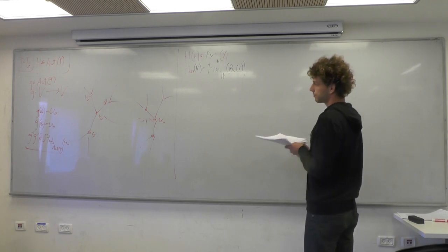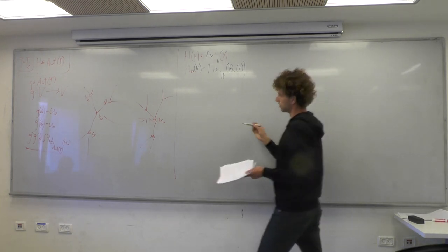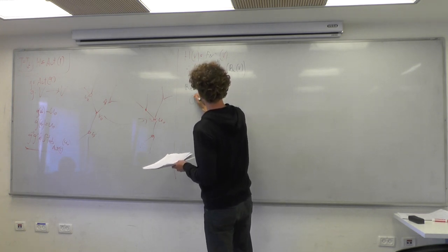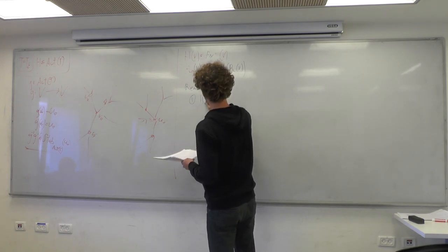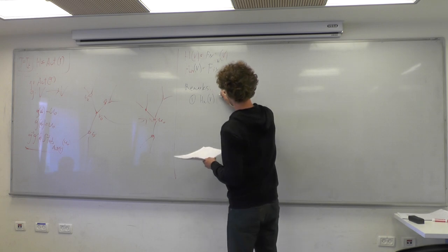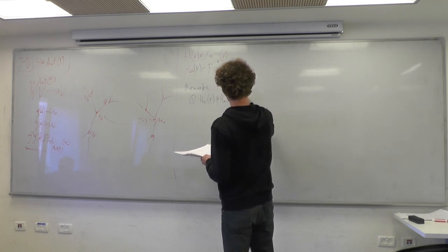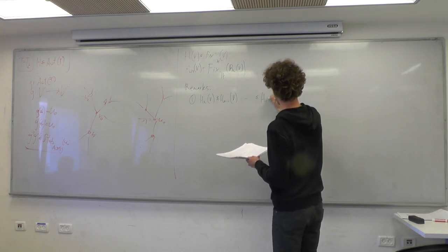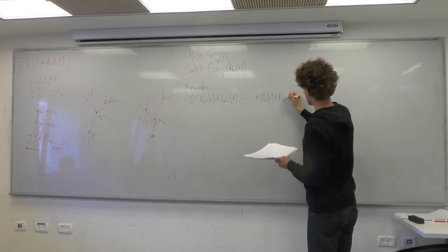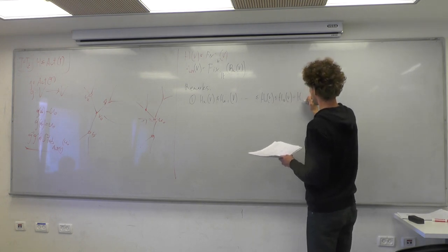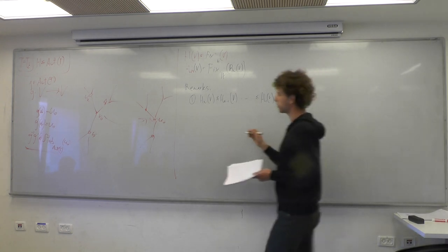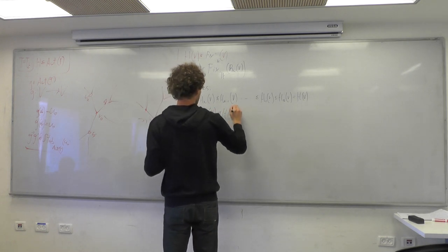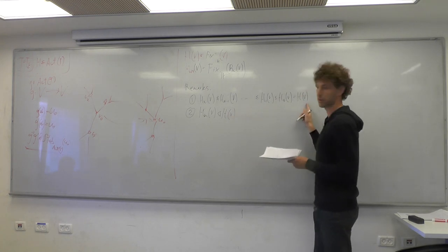Let me make a few remarks. Of course H_n(v) is a subgroup of H_{n-1}(v), and so on down to H_1(v) and H_0(v), which I just denote H(v). Moreover, these subgroups are all normal — not just in H(v), but in a bigger subgroup.